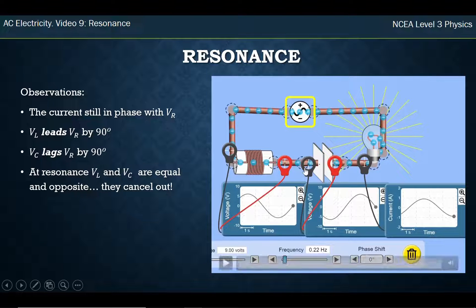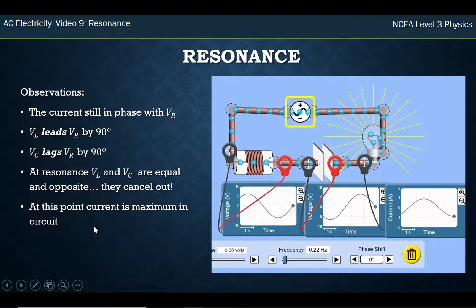But at this point of resonance, when I can get the frequency just right, my voltage over my capacitor and my voltage over my inductor are equal and opposite and they cancel out. And at this point, my current maximizes and I get the brightest bulb I can possibly get.